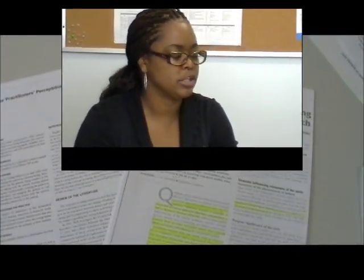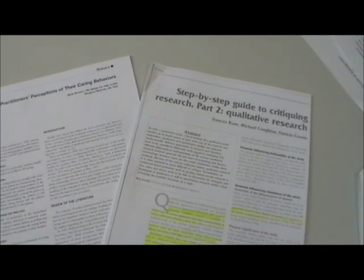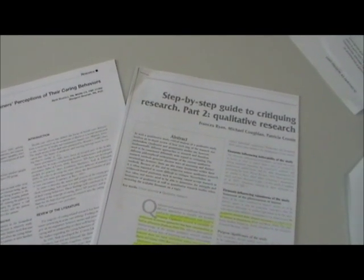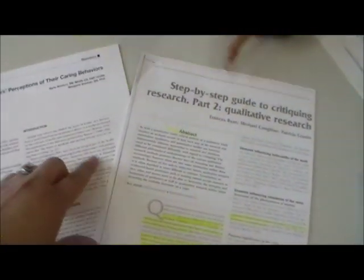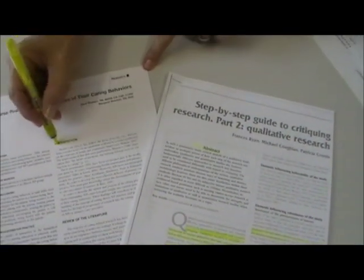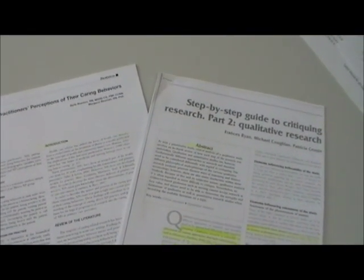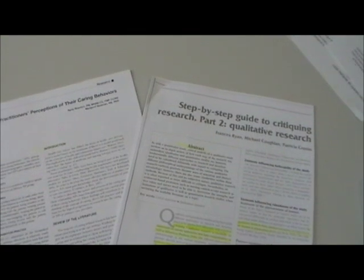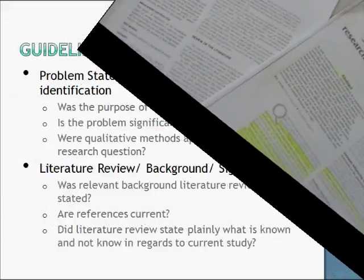Since qualitative research can be somewhat convoluted, how can we determine the study's purpose and the background literature? As part of your critique, you need to ask yourself if the purpose or research question was stated clearly. It's usually going to be in the abstract or introduction, or it can even be restated as a question. For background literature, you need to make sure that the literature is relevant to your topic, that it's current, and should cover gaps in current knowledge that will support the research.